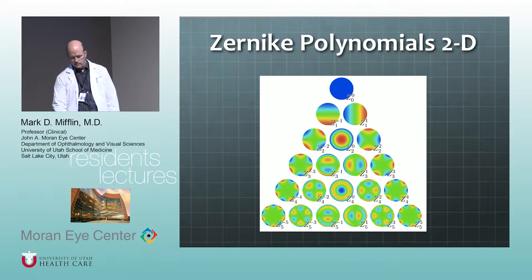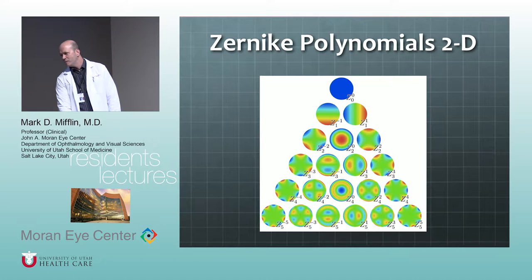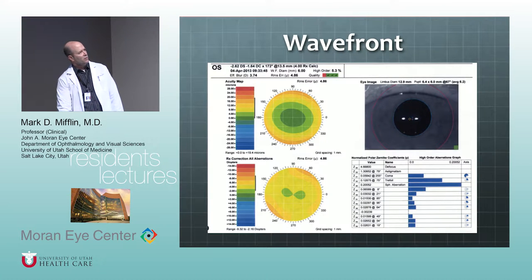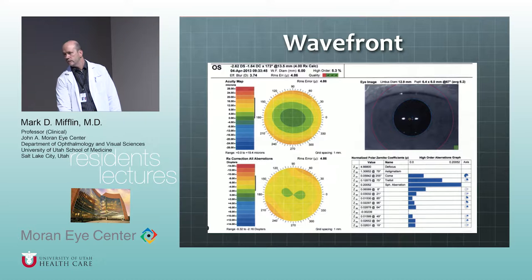There are more than two ways to describe higher-order aberrations, but you'll see them described as Zernike polynomials and also Fourier analysis. It is important to understand wavefront. We use two terms: guided and optimized. This is an example of the VisX, probably the second most common laser worldwide used for refractive surgery — it's called a WaveScan analysis. Wavefront is not using the refraction as the primary guiding method for the amount of correction.